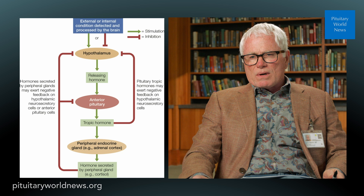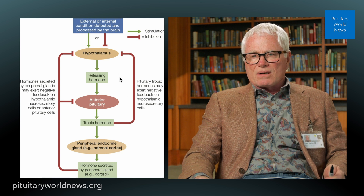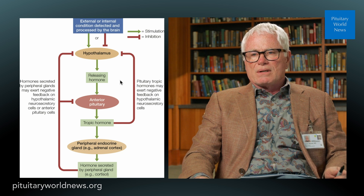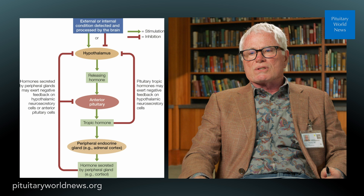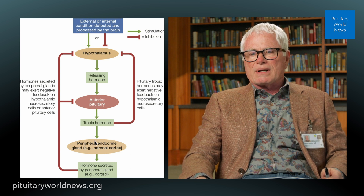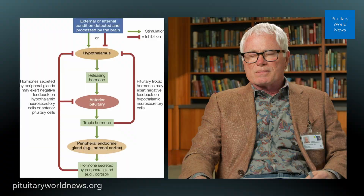In closing, disease of the hypothalamic pituitary unit can affect any one of these sites. You can have disease of the hypothalamus or disease of the pituitary stalk that interferes with the delivery of hypothalamic hormones to the pituitary, or pituitary disease itself. Of course, people can also have disease of their peripheral glands — the thyroid or whatever — and that can be reflected in how the pituitary and hypothalamus respond, as we'll discuss in future episodes. Thanks for tuning in and stay tuned for additional episodes of Pituitary 101.